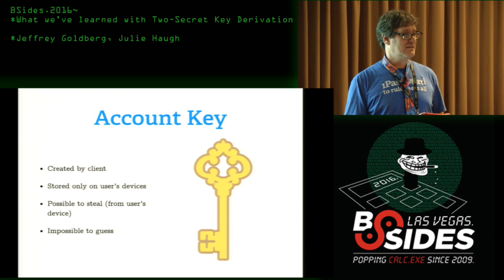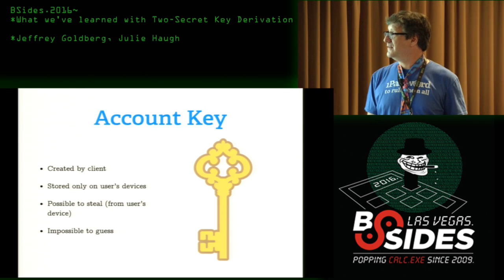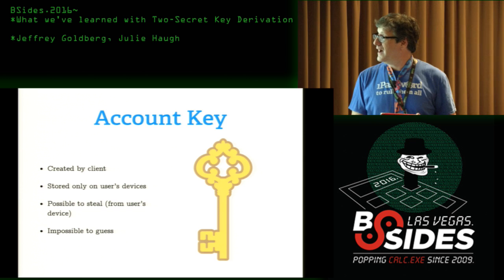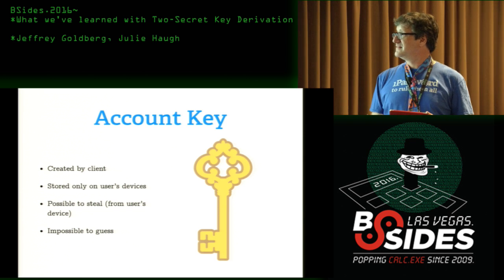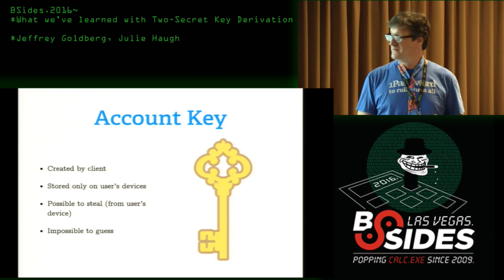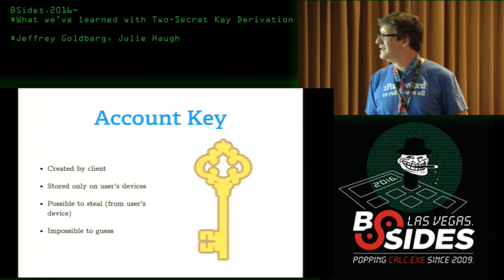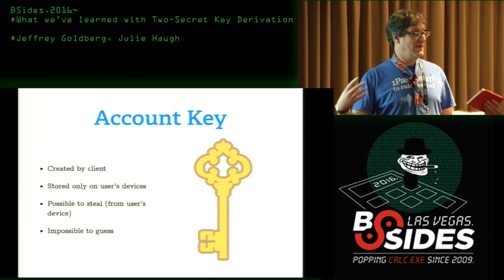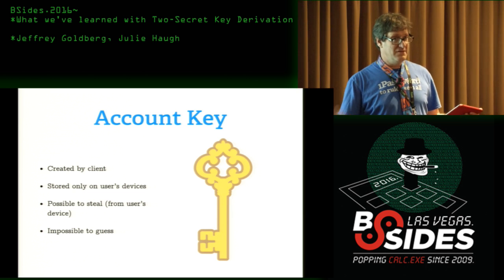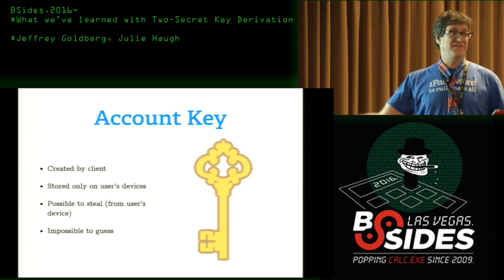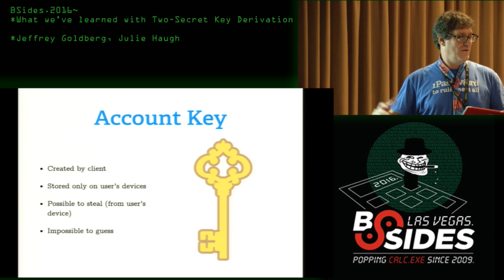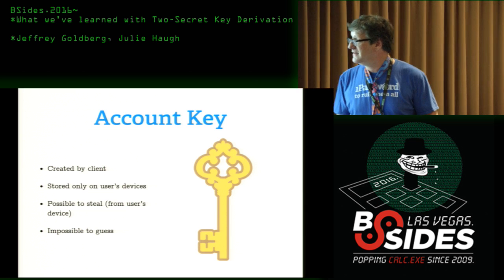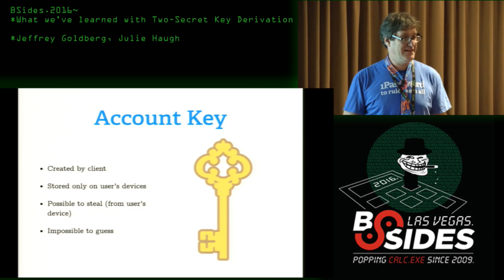The account key is created randomly by the client — 128 bits. It is stored only on the user's device. It is possible to steal, because it's stored on the user's device before they actually get their keys for encrypting their data. And it's pretty much impossible to guess.